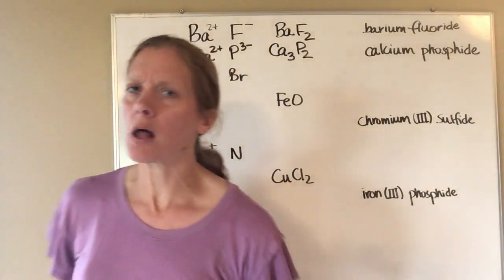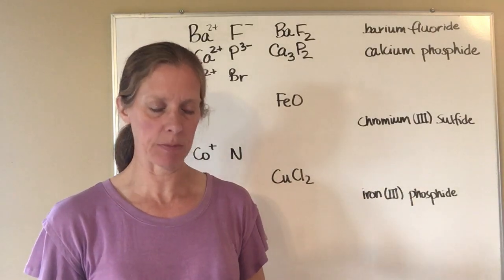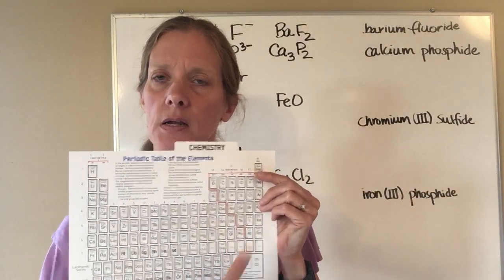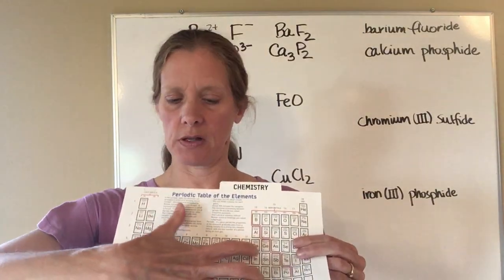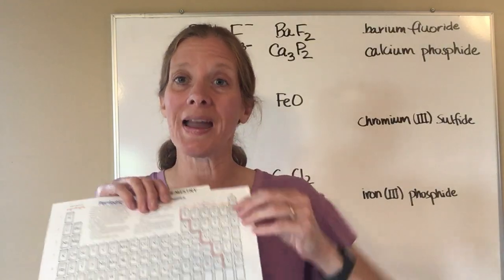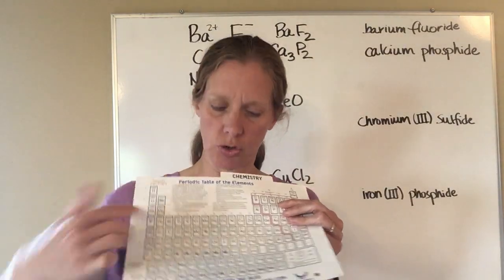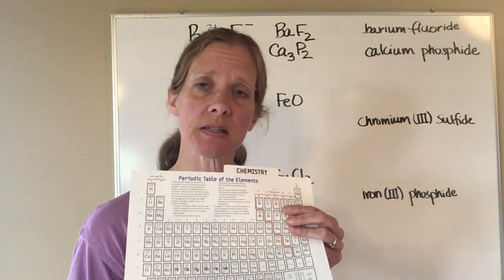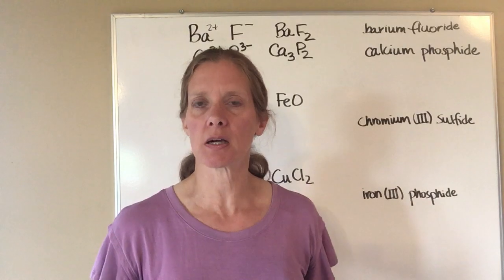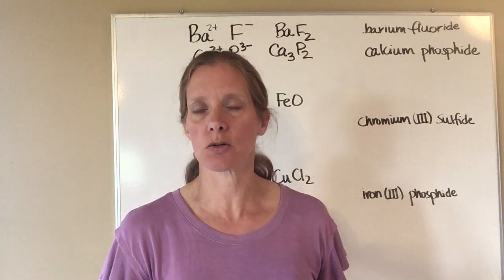Now things get more complicated when we look at the middle of the periodic table. There's a stair-step line: everything to the left is classified as a metal with a positive charge, everything to the right is a non-metal. You know how to find the charge on aluminum and the first two columns, but the elements in the middle — the D block, the transition metals — don't follow those rules. Some of those metals can have many different charges, so you have to be told the charge in order to figure out the compound.